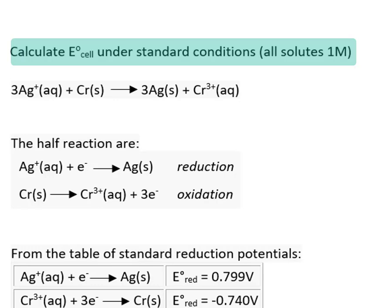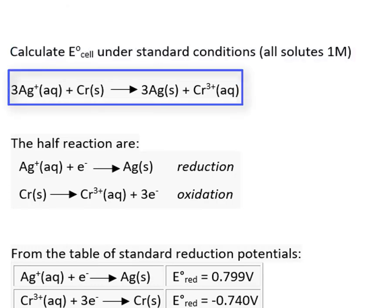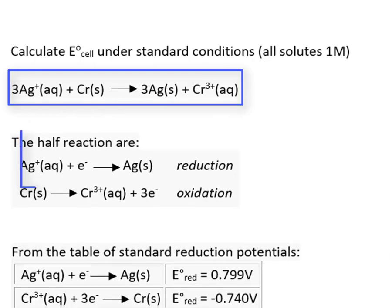The superscript, which looks like a degree sign, implies standard conditions. Here we have a reaction between silver ion and chromium solid. The two half reactions are as follows.